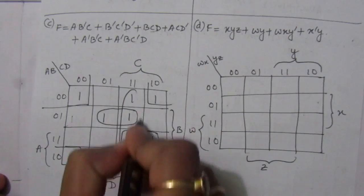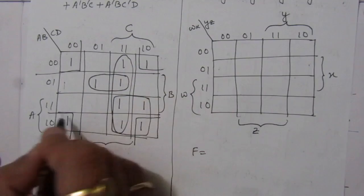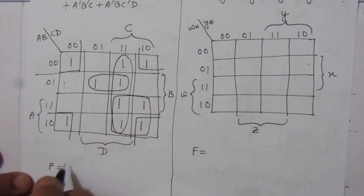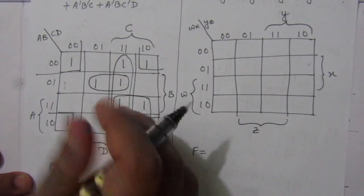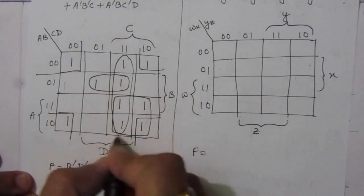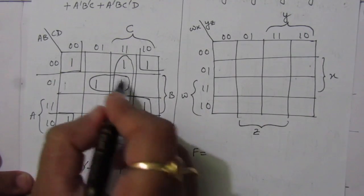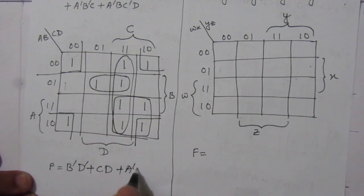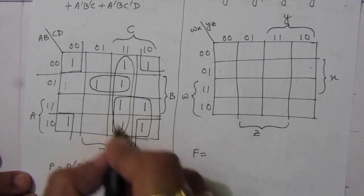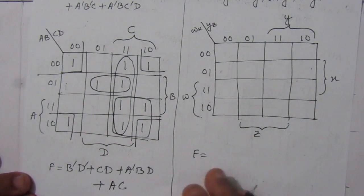After simplification: for the corner values we get B-bar D-bar, plus this term gives CD, plus this term gives A-bar B D, plus this term gives AC. So this is the solution of the third part of the problem.